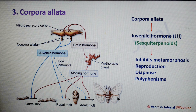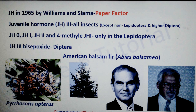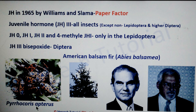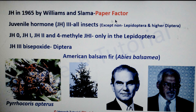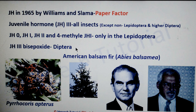In adults, juvenile hormone acts as a gonadotrophic hormone. The role of juvenile hormone in the growth of insects was recognized in 1965 by Carroll Williams and Slama. They were maintaining cultures of Pyrrhocoris apterus bugs, belonging to the family Pyrrhocoridae, and the bugs would not develop into normal adults. They revealed that the paper towels made from American balsam fir used in the rearing jars were the source of the substance, which was called the paper factor. Till now, 6 juvenile hormone forms have been recognized in insects, of which juvenile hormone 3 is present in all insects except non-lepidopterans and higher dipterans. JH0, JH1, JH2, and 4-methyl-JH1 appear to exist only in Lepidoptera, whereas JH3-bisepoxide is present in Diptera.